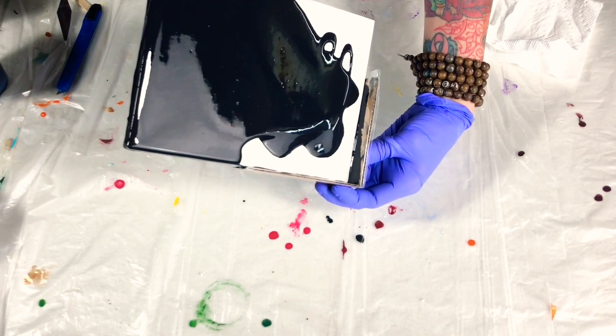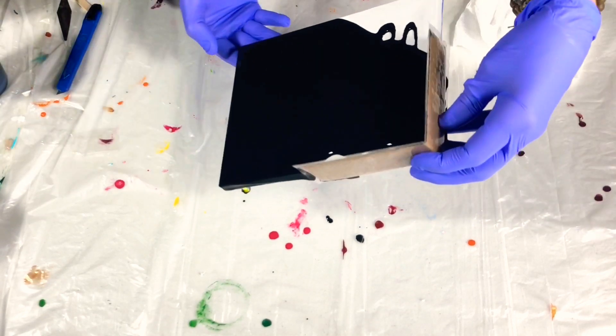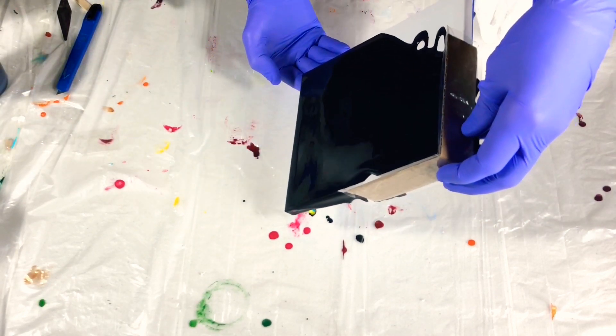So if you imagine this canvas, you know you just poured a ring pour or a flip cup and you really liked the pattern that was in the middle and you kind of wanted to save it, this is a great trick for that.